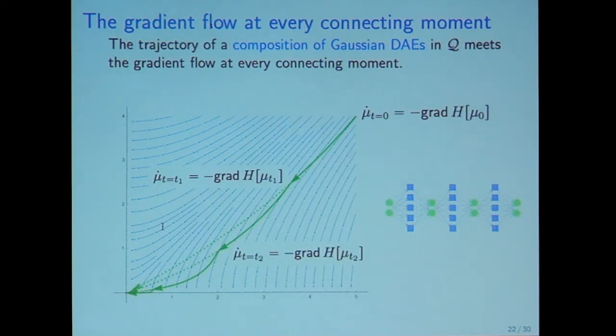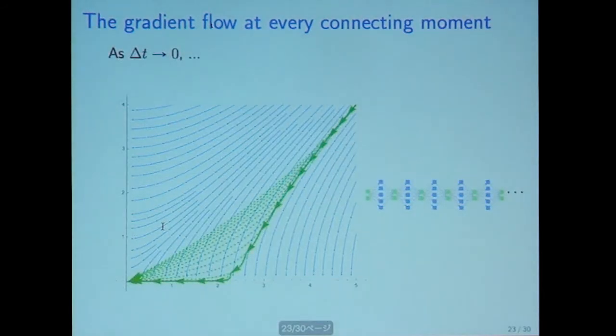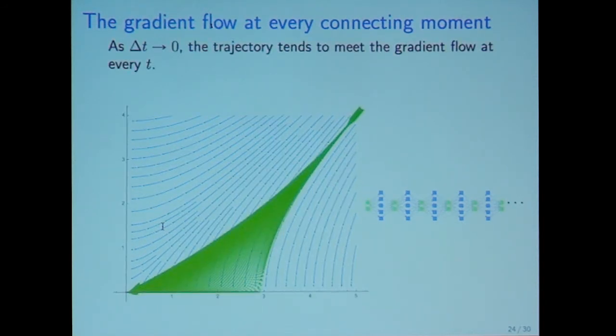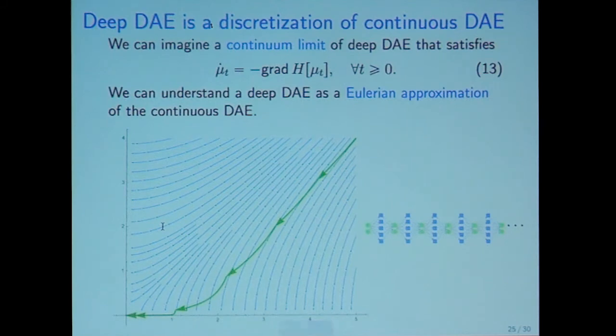Now consider the deep neural network case, the composition of Gaussian DAE case. I mean that we iteratively train denoising autoencoder and take push-forward measure of data distribution and train another denoising autoencoder and compose it. Then every connecting moment, we can expect that the velocity vector is parallel to the gradient vector. We consider the limit as delta T tends to zero.